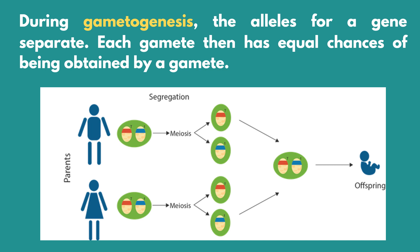Based on the diagram, the sex chromosomes of both parents undergo meiosis, a type of cell division. During meiosis, the alleles of the parents separate and can be obtained randomly by their offspring. This gives us the opportunity of acquiring different characteristics or traits from our parents, which makes us unique from our siblings or from one another.